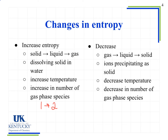Now let's look at some characteristic features of decreases in entropy — these are increases in order. As we go from a gas to a liquid to a solid, we become more ordered in the arrangement of the atoms, and so we are decreasing entropy. If ions are precipitating as a solid — basically the opposite of dissolving a solid in water — if we have ions mixed in with water molecules and then they precipitate out as a solid, we are going to see a decrease in entropy.